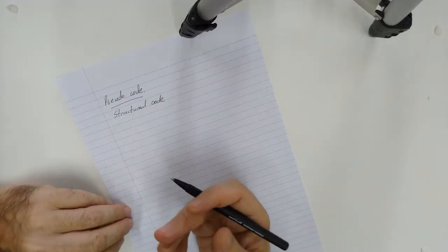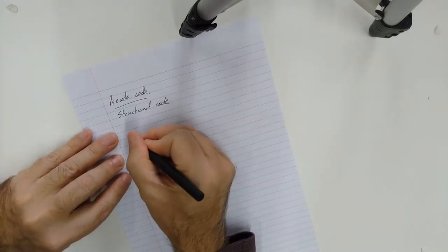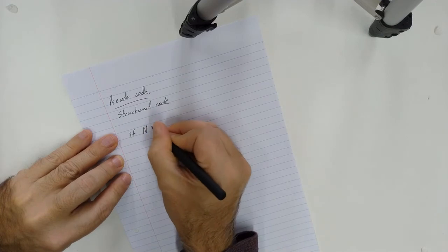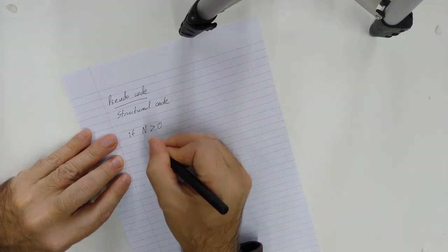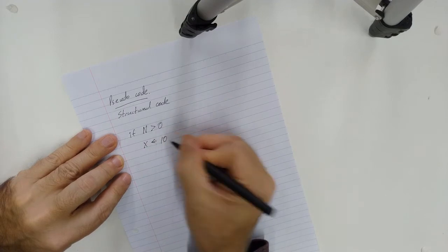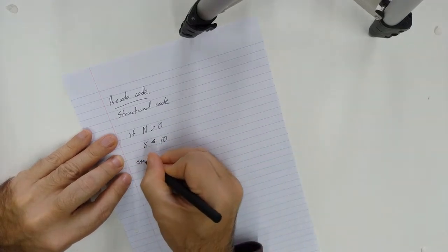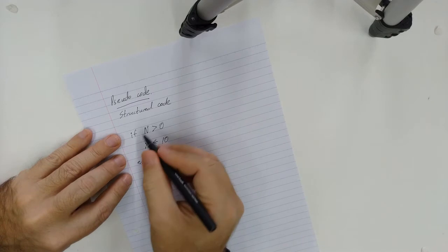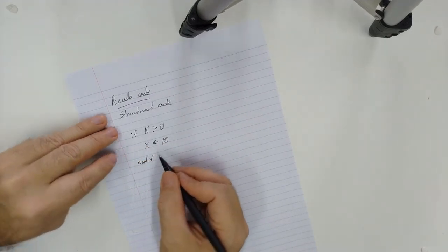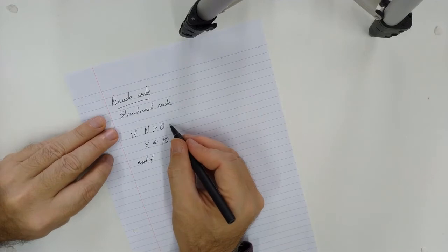I could say, if N is larger than zero, set X to the value of 10, for instance. And then I might say 'end if' just to be clear that this is where my if statement ends. Instead of using where one language might use curly braces.